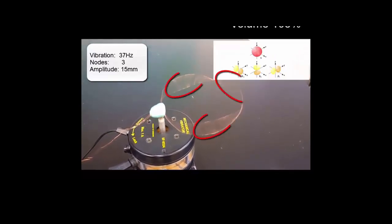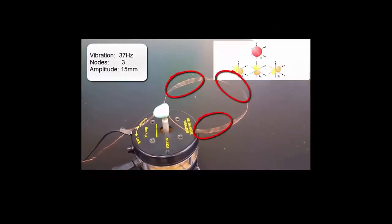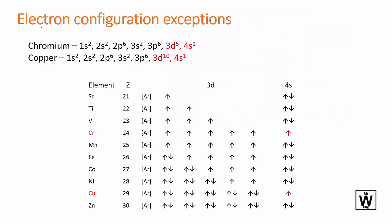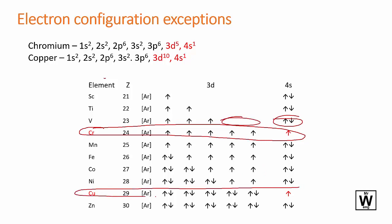And if I go back to the slide again, you can actually see that chromium does have that balance. If they're spinning all in the same direction, this is quite imbalanced here and same with copper. But it's far more balanced.